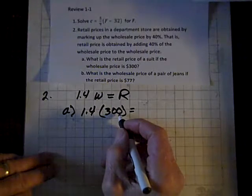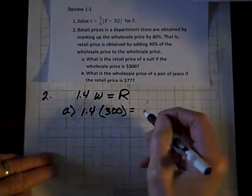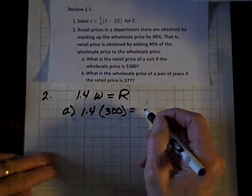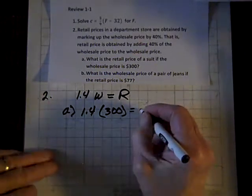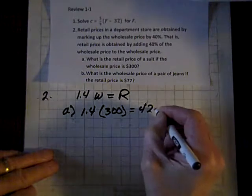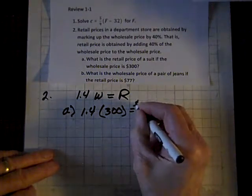Well, 1 times 300 is 300, and 40 percent of 300 is 120. So 120 and 300 is 420. So that'll be 420 dollars.